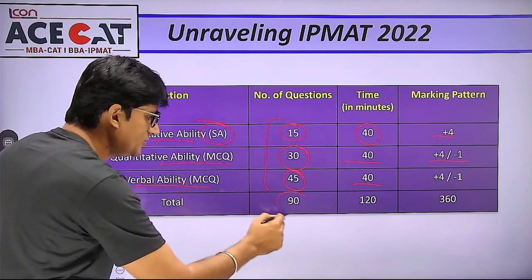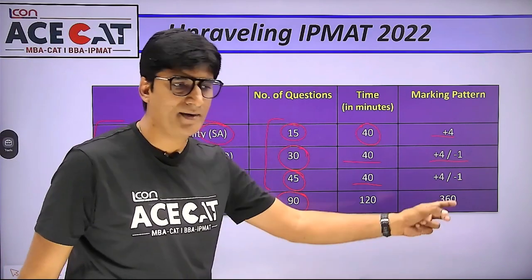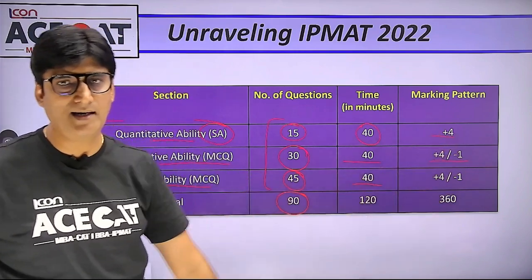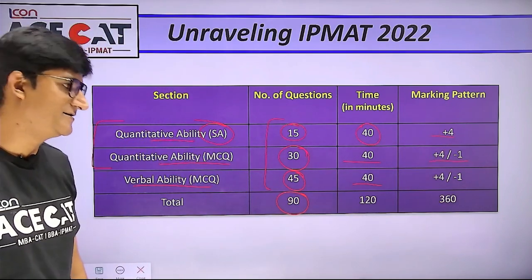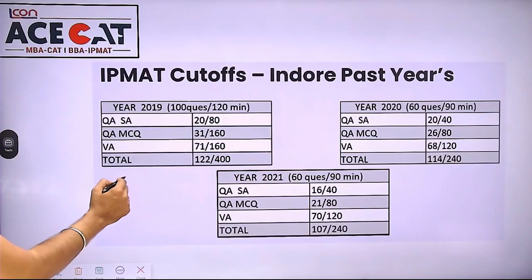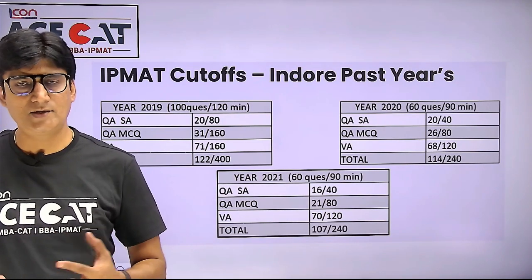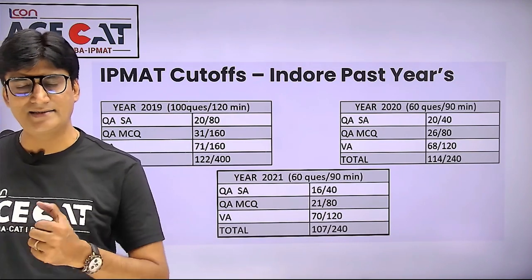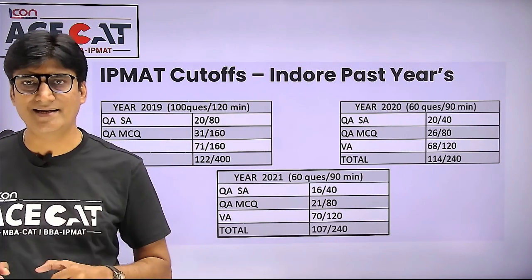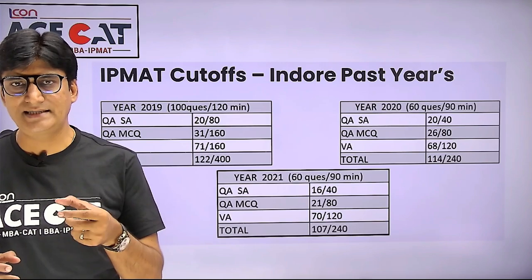So these three sections made up the complete paper: total 90 questions, 120 minutes of time, and maximum marks 360. Now, coming to the cutoff marks for 2022 — we will discuss that in the next slide. But first, let's look at the 2019, 2020, and 2021 cutoffs.